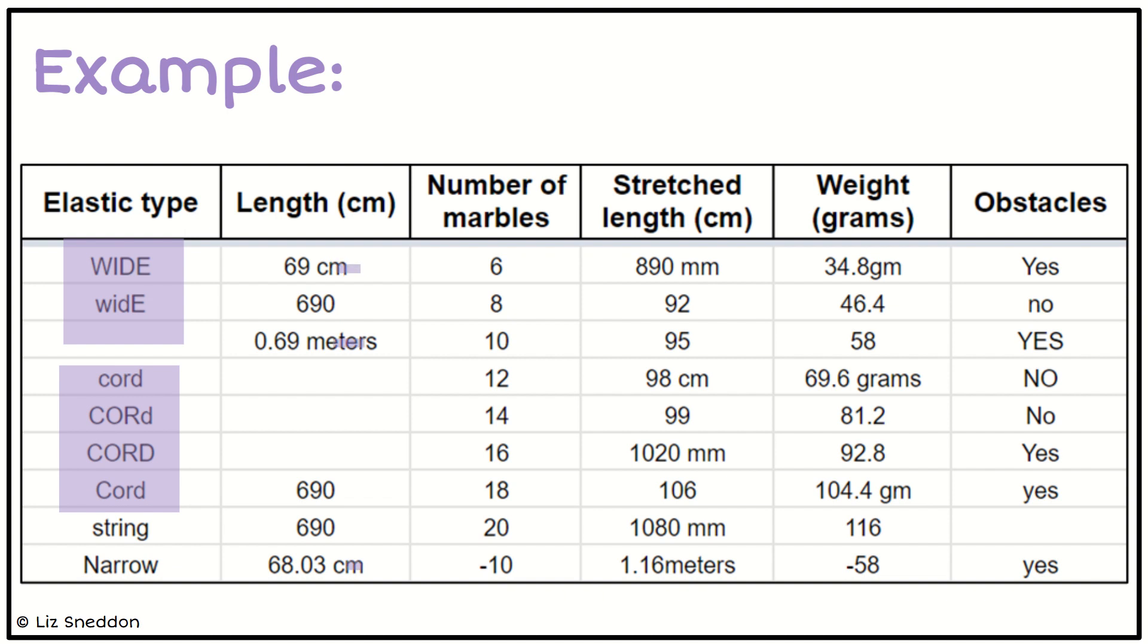When we look at our length, we notice we've got some in centimeters and some in meters. The column heading says 'length (cm),' so we want our data to be in centimeters. The one data point of 0.69 meters needs to be changed to centimeters by multiplying by 100. We also need to remove the units from the cell because otherwise Excel will treat it as text rather than data.